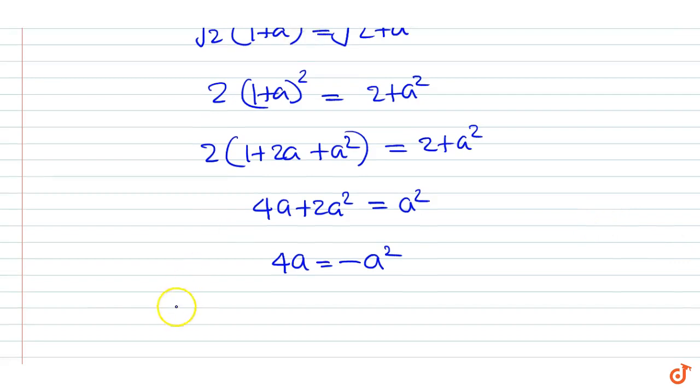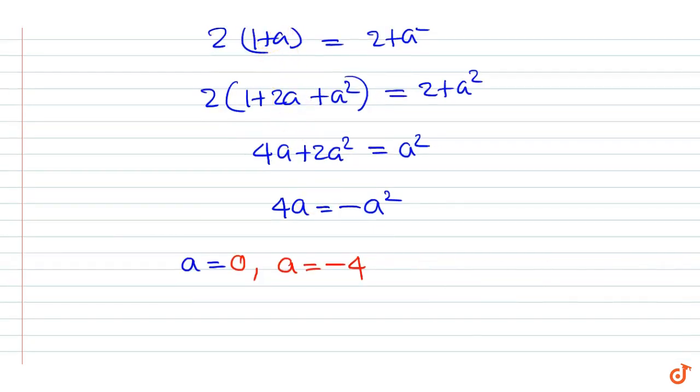That means a is equal to 0 or a is equal to minus 4. So the possible values of a are 0 or minus 4.